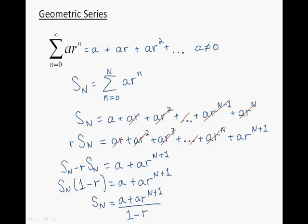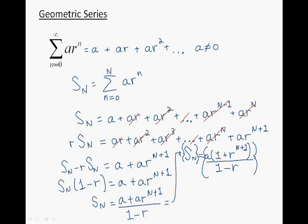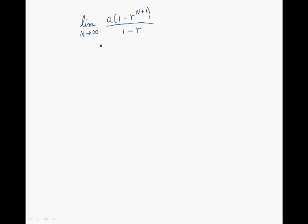Now we look at the sequence of partial sums. If this sequence converges, then we can say that the geometric series also converges. To determine this, we look at the following limit. A and R are constants, and what we're going to see is that the limit will equal a finite number for certain values of R, and will tend to infinity for other values of R.